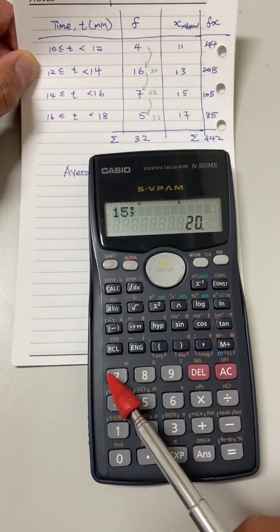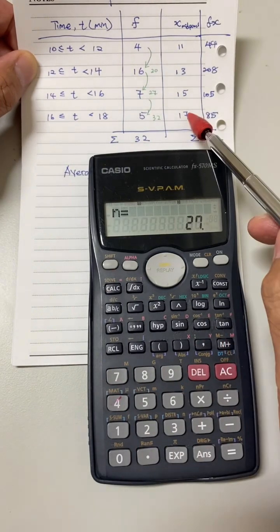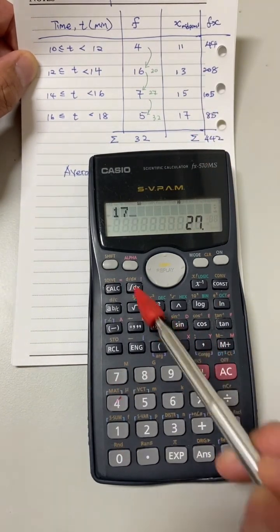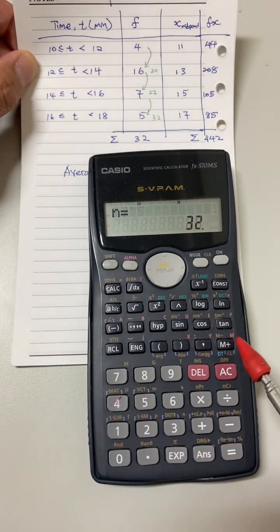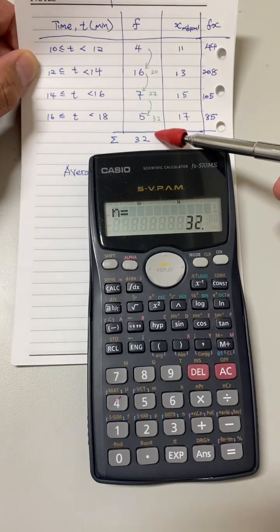Then, follow on with the third set of data and fourth set of data. Remember, you need the semicolon, so press shift comma, and then M plus. 32, total frequency 32.